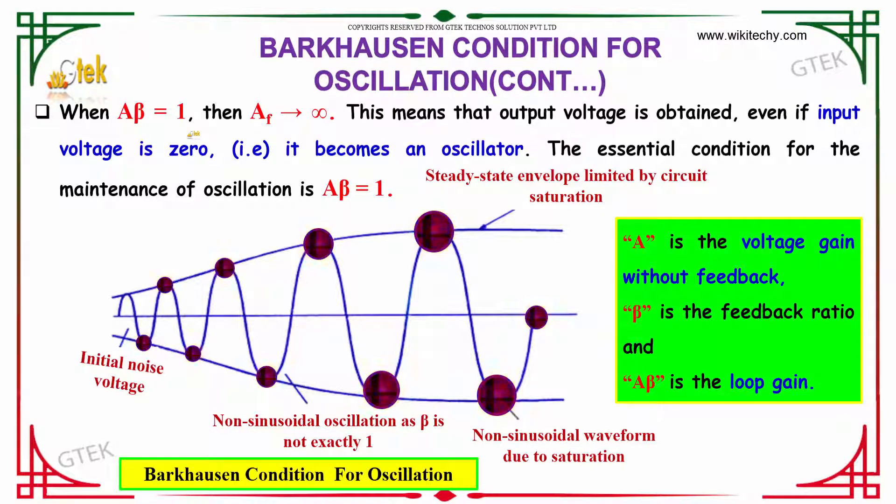When A beta is equal to 1, then the feedback AF becomes infinity. This means that the output voltage is obtained even if input voltage is zero. It becomes an oscillator.